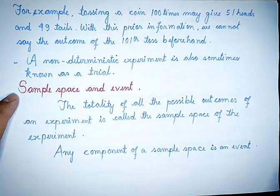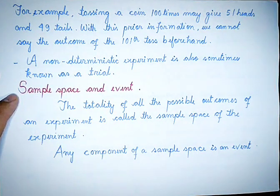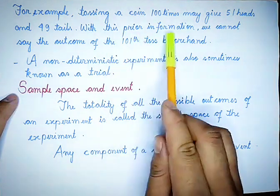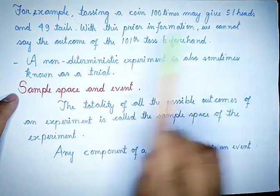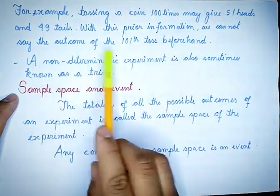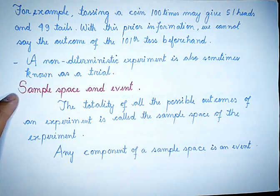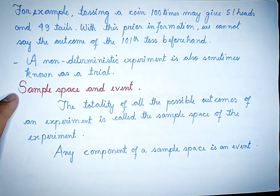For example, if 51 heads and 49 tails have appeared in 100 tosses, with this prior information we cannot say the outcome of the 101st toss beforehand.